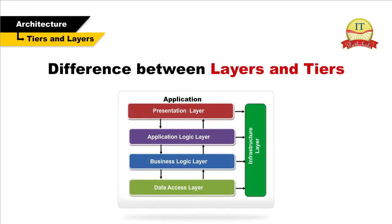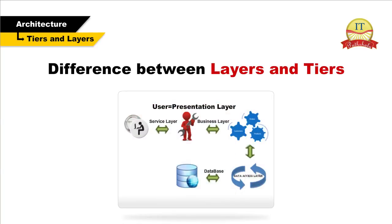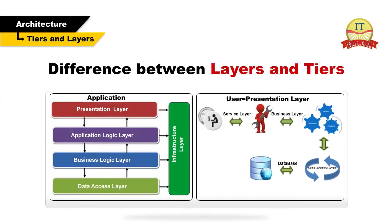Difference between layers and tiers: Layers describe the logical grouping of the functionality and components in an application, whereas tiers describe the physical distribution of the functionality and components on separate servers, computers, networks or remote locations. Although both layers and tiers use the same set of names, remember that only tiers imply a physical separation. It is quite common to locate more than one layer on the same physical machine.